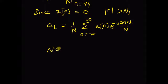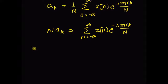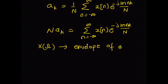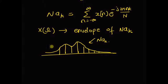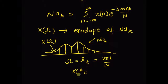By moving N to the left side, N·a_k equals the summation from n = −∞ to +∞ of x[n] · e^(−j·2π·n·k/N). Now let us define a function X(ω), which is basically the envelope of N·a_k. Assuming this sequence is N·a_k, then X(ω) is its envelope. So clearly, at ω = ω_k = 2π·k/N, X(ω) equals N·a_k. Thus X(ω) is the envelope of the sequence N·a_k.